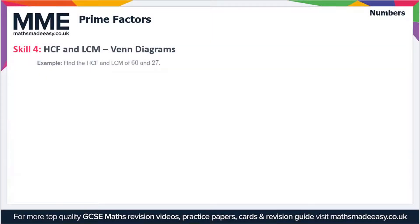Welcome to the Maths Made Easy tutorial on prime factors. In this video we'll be looking at finding the highest common factor and lowest common multiple using Venn diagrams. For instance, if we've got two numbers — 60 and 27 — and we want to find the highest common factor and lowest common multiple, we first have to find the unique prime factorization of each number.